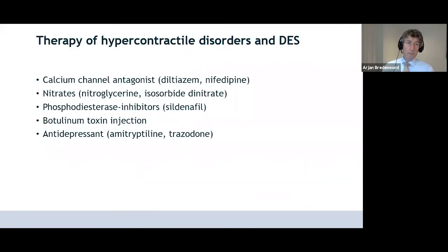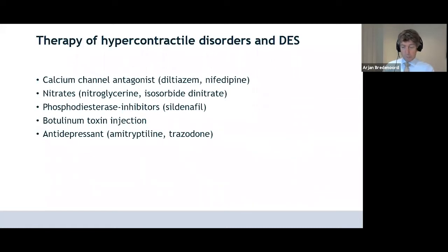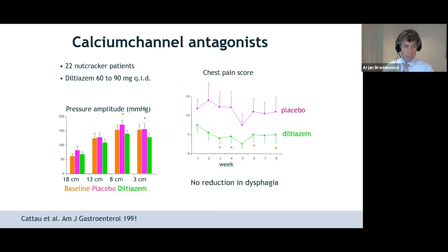I'll take hypercontractile disorders and DES together because treatment is very similar. The options are calcium channel antagonists, nitrates, phosphodiesterase inhibitors, Botox, and antidepressants. I'll start with calcium channel antagonists. Most of the studies I'll show you are quite old, and there's a real demand for new sham- or placebo-controlled studies, particularly using high-resolution manometry.